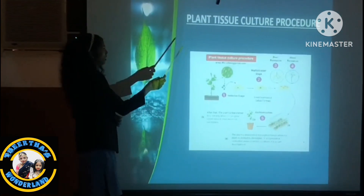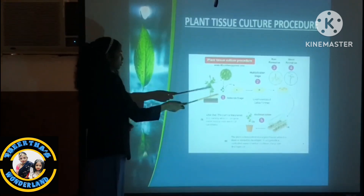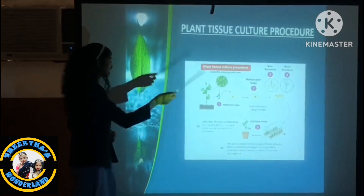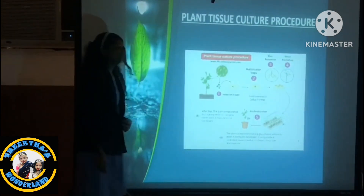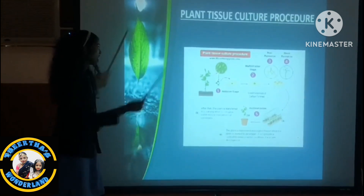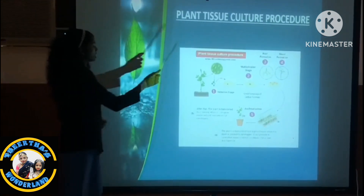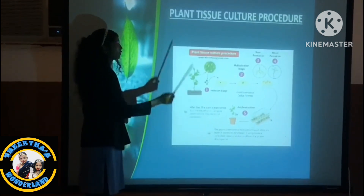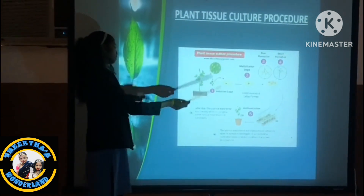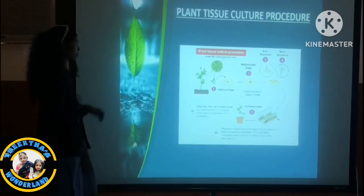This is the procedure of meristem culture. The first stage is the initial stage where we take the cell from the plant. The second stage is the multiplication stage where the cell is not yet differentiated. The third stage is where we differentiate the plant by adding root formation. The fourth stage is where we add fruit formation, and it is transferred into a greenhouse where acclimatization happens and then it is transferred into a pot.